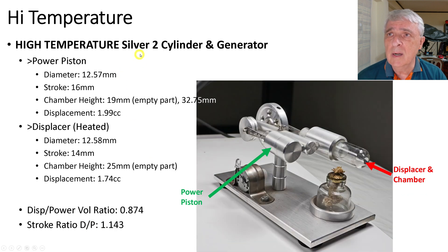The next is the high temperature, I call this the silver two-cylinder and generator, because there's a generator. We're not using it here, just something to call it that differentiates it from the others. The power piston is over on this side. The diameter is 12.57 millimeters across this way. The stroke is 16 millimeters back and forth this way. The chamber height, again I should have called it length, is 19 millimeters, the empty part in here. The total distance from the very back to the very front is 32.75. That's not really very interesting, other than perhaps if you're building one. And the displacement is about 2 cc's.